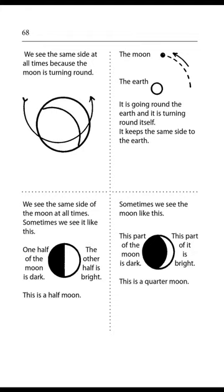Page 68. We see the same side at all times because the moon is turning round. The moon is going round the earth, and it is turning round itself. It keeps the same side to the earth. We see the same side of the moon at all times. Sometimes we see one half of the moon dark and the other half bright. This is a half moon. Sometimes we see part of the moon dark and part bright. This is a quarter moon.